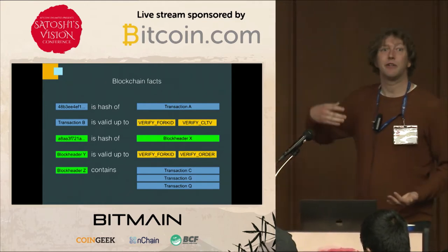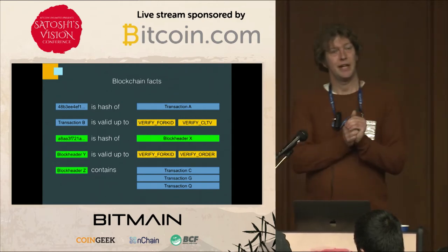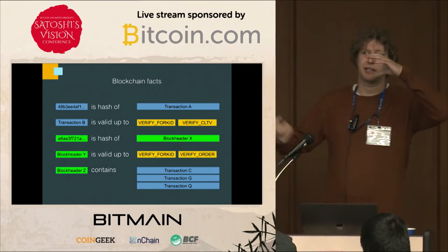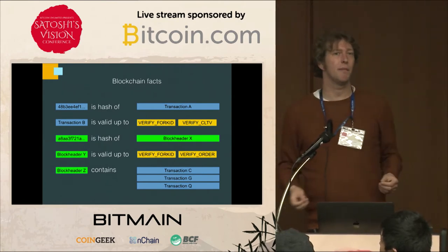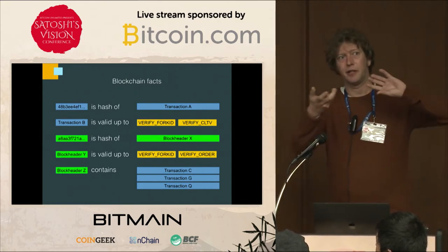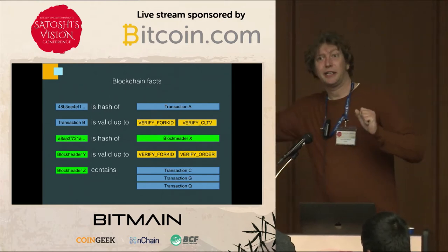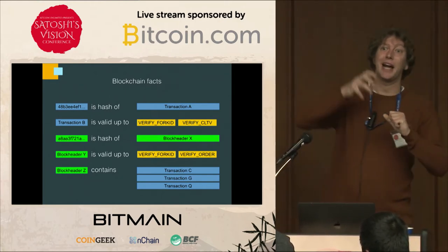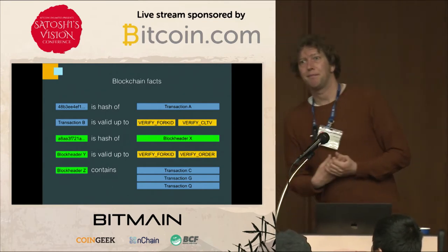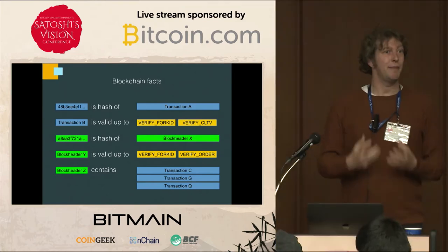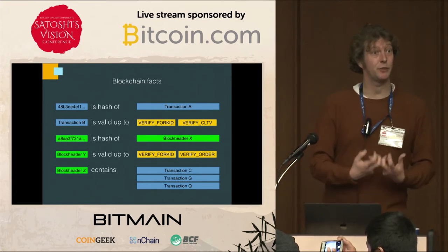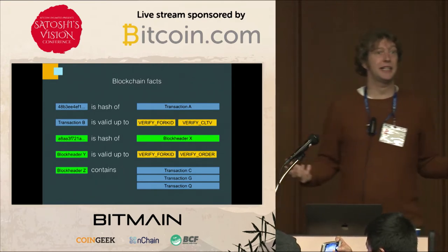What implementations do is ignore this. They maintain a main chain and keep the side branches separately. Whenever the side branch becomes the longest, a complicated process called a reorg takes place. The blocks on the main chain have to be undone, and then the blocks on the side chain have to be reapplied onto the main chain. This essentially turns the entire main chain into one big mutable object which must be updated in a consistent way.